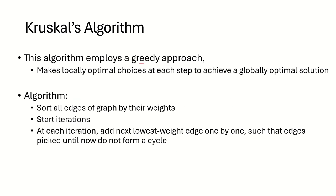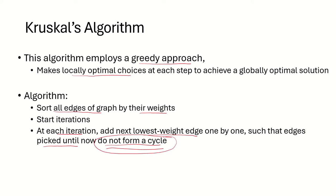This algorithm employs a greedy approach, meaning at every step it is going to make some locally optimal choices. Broadly, the algorithm works by first sorting all the edges of the graph by their weights, then at each iteration it adds the next lowest weight edge one by one, such that the edges picked so far do not form a cycle. This is one of the major considerations — there should not be any cycle or loop.